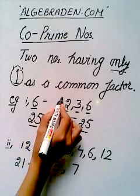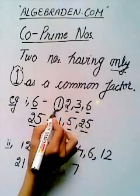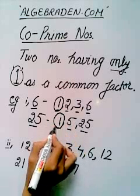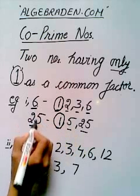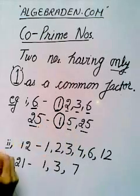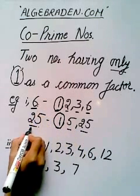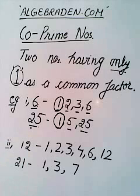So, here we see 1 is the common factor among these two numbers. So, these two numbers are co-prime numbers.